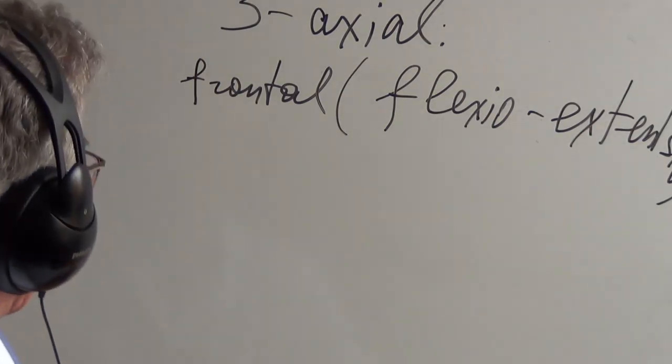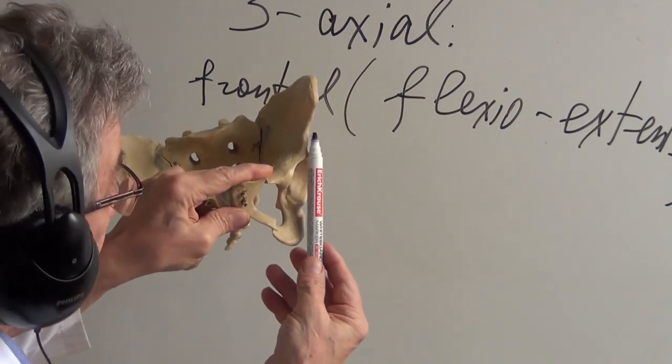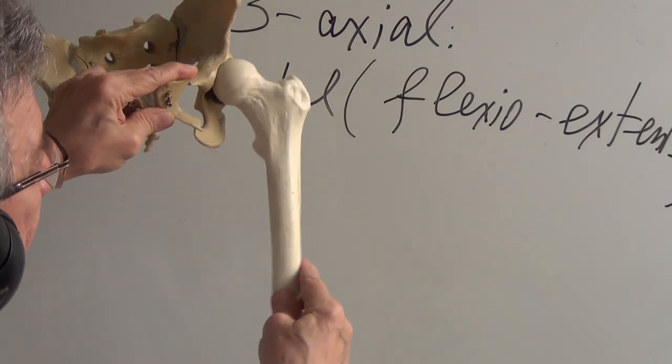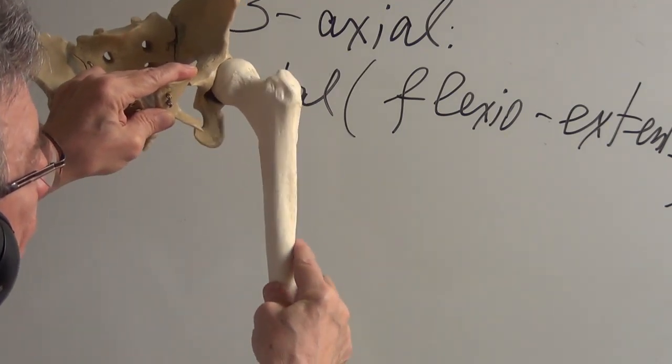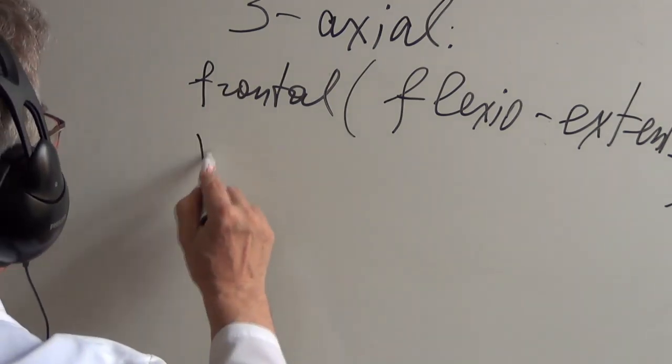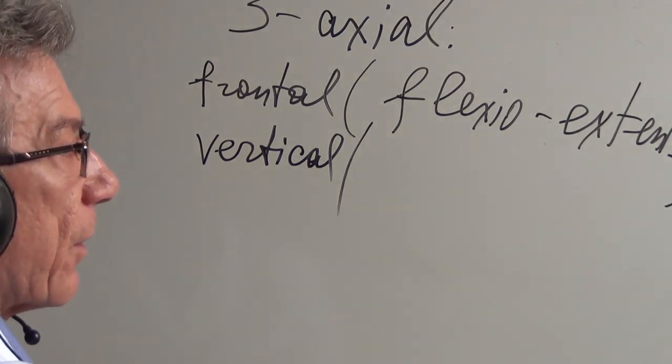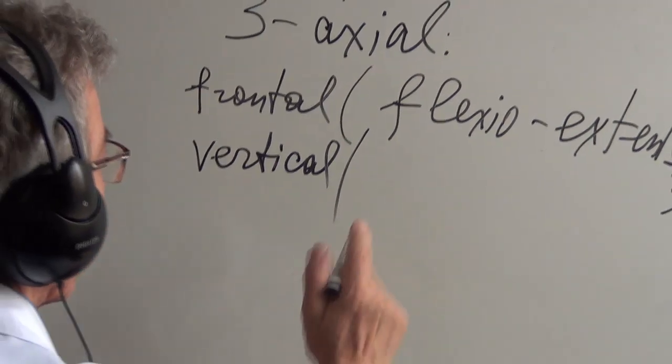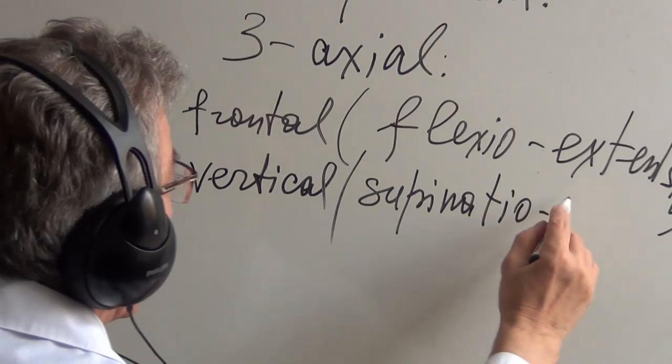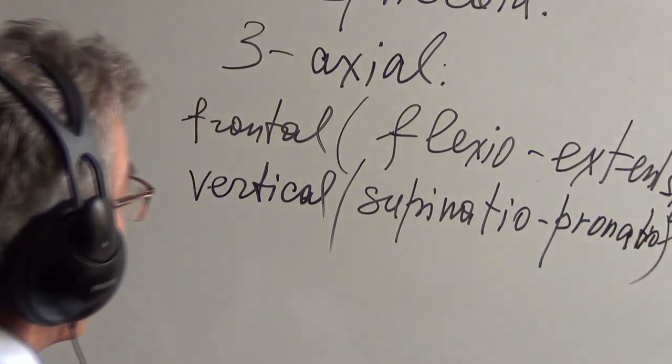Next axis is vertical axis. Do you agree? This is vertical axis. And around this axis we can rotate the femur. So vertical. This rotation consists of two different movements: supinatio and pronatio.